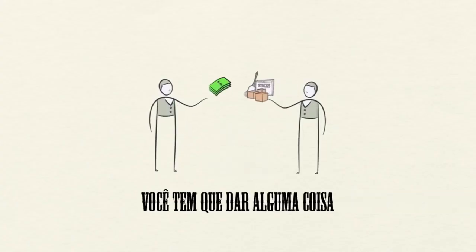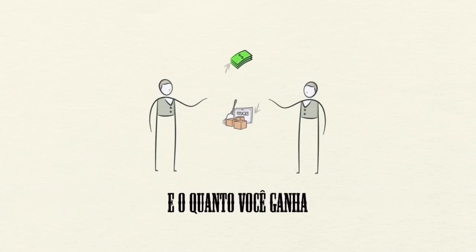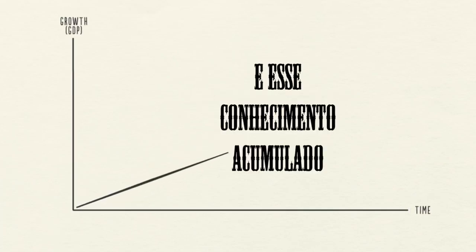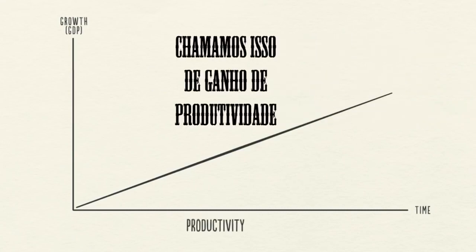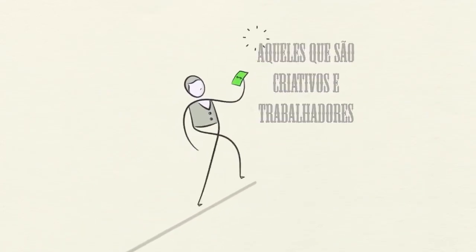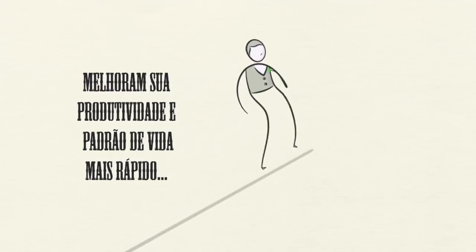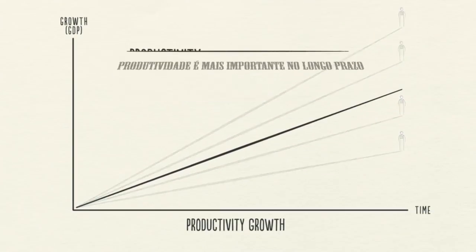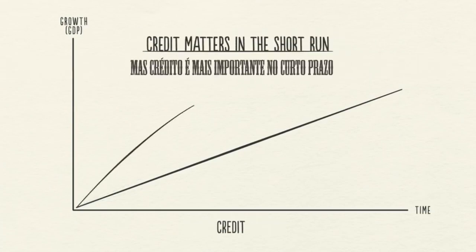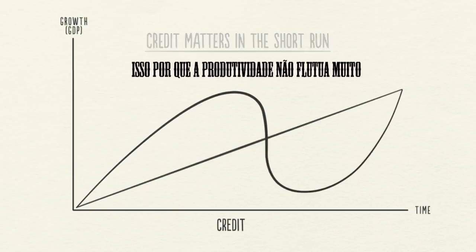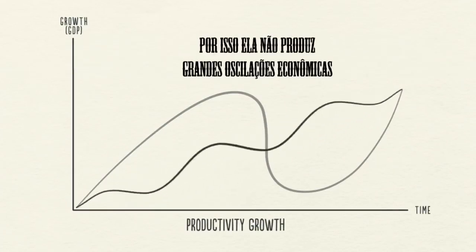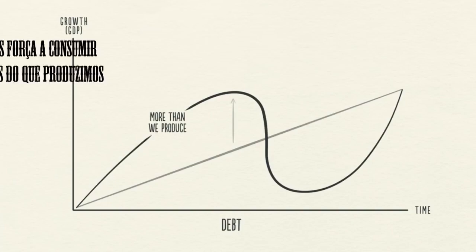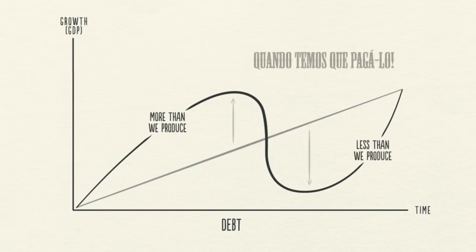In a transaction, you have to give something in order to get something, and how much you get depends on how much you produce. Over time, we learn, and that accumulated knowledge raises our living standards — we call this productivity growth. Productivity matters most in the long run, but credit matters most in the short run, because productivity growth doesn't fluctuate much. Debt is, because it allows us to consume more than we produce when we acquire it, and forces us to consume less than we produce when we pay it back.